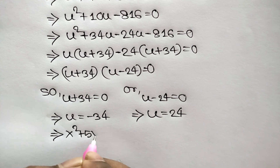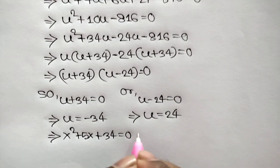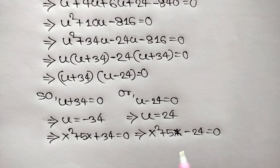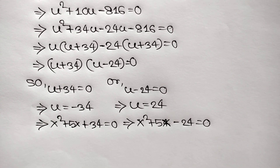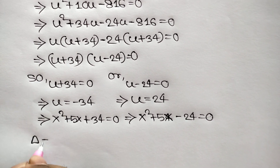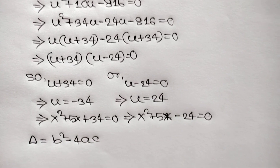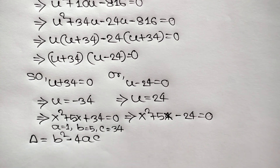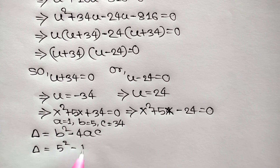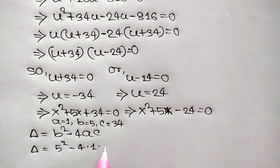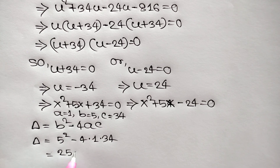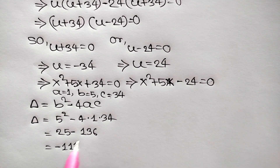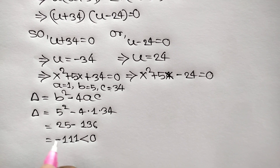For u equals −34: x²+5x+34 equals 0. Using the discriminant formula, Δ equals b²−4ac with a=1, b=5, c=34, so Δ equals 25−136 equals −111. Since Δ is less than 0, there are no real roots, so this case is rejected.